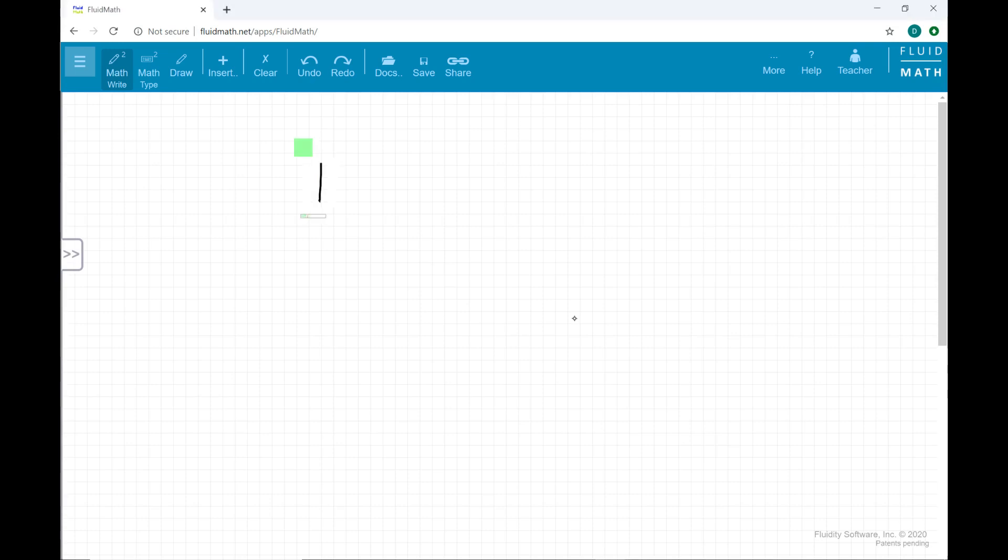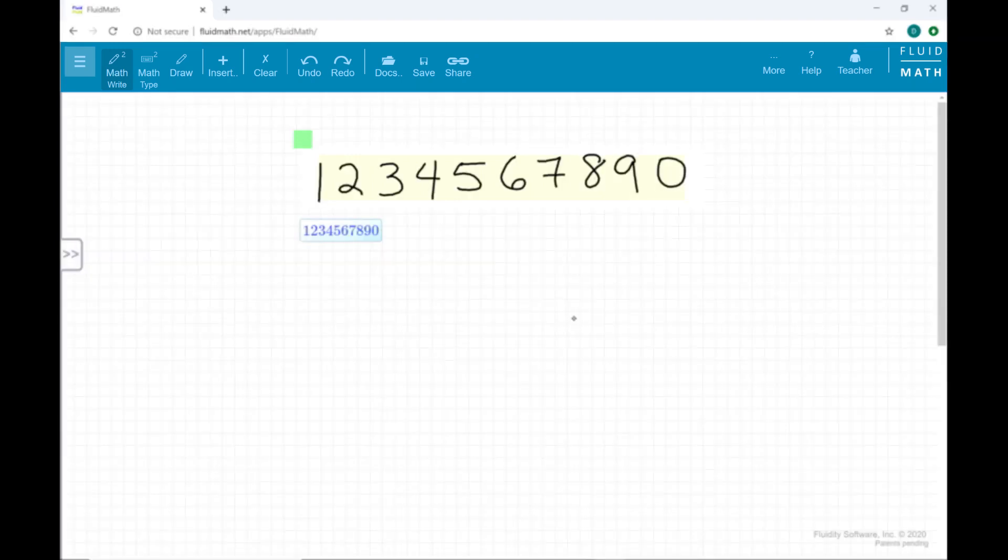If you are new to fluid math and to writing on the screen of a touch screen device, we recommend that you start with writing individual numbers and symbols. For example, write 1, 2, 3, 4, 5, 6, 7, 8, 9, 0.